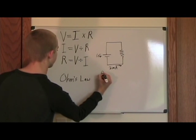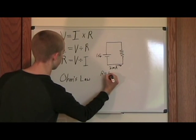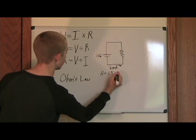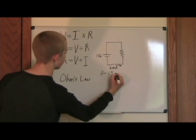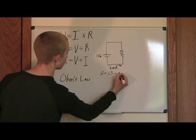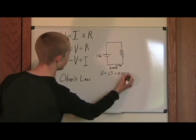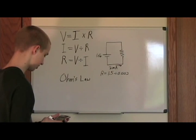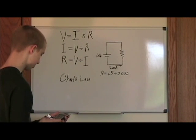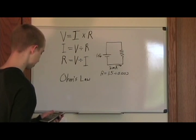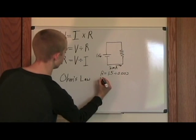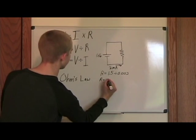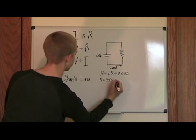So R equals 1.5 divided by 0.002 amps. Use the calculator. It's 750, so R equals 750 ohms.